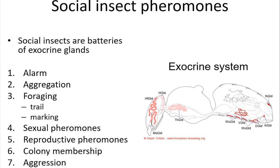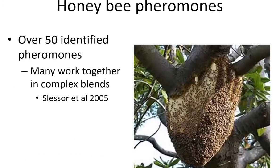Overall in social insects, pheromones serve these classic functions: alarm functions, aggregation, foraging uses such as marking trails and marking flowers, sexual and reproductive pheromones as fertility signals, and colony membership recognition. All social insects have that — they can recognize self versus non-self, where self is a member of the colony and non-self is not. In the honeybee we've identified about 50 pheromones, though it's not clear how many signals they represent because many of them work together in complex blends.